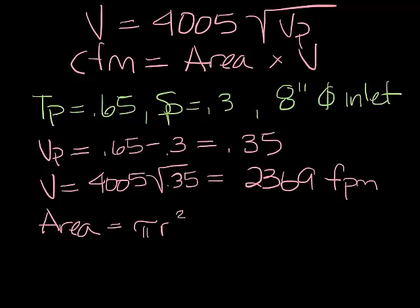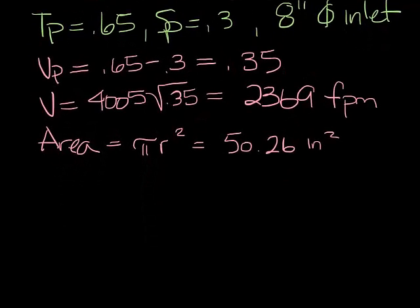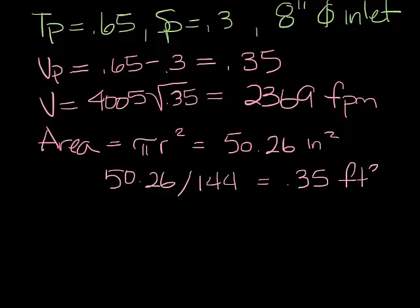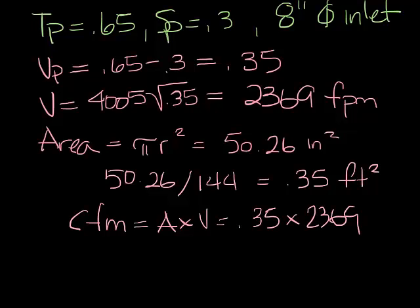Now the area is pi r squared, so when you work that out, you come up with 50.26 square inches. Now we need to work in feet, so let's take our 50.26 inches and divide it by 144 square inches per square foot, and you get 0.35 square feet. So now the CFM is the area times the velocity, which equals 0.35 times 2369 feet per minute, and you get a CFM of 829 CFM.